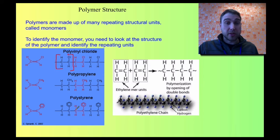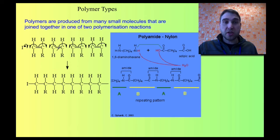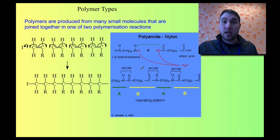Similarly with polypropylene and polystyrene — the repeating unit is highlighted in red, and you can see the repeating unit of each. There are two basic ways of producing a polymer: addition reactions and condensation reactions. In addition reactions, you are usually just breaking a double bond and joining the monomers together at the point where the double bond breaks. With condensation polymers, a small molecule is emitted when the monomers join together.